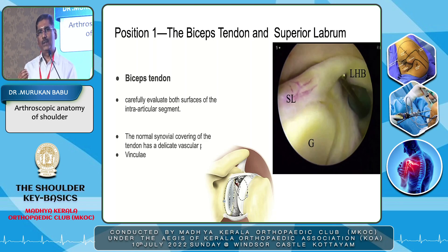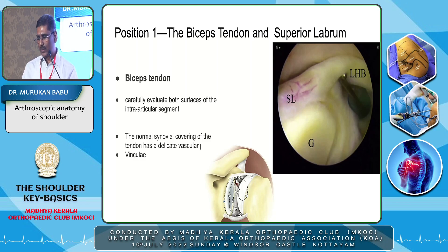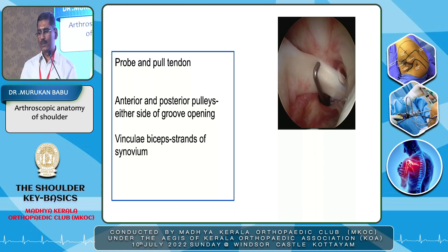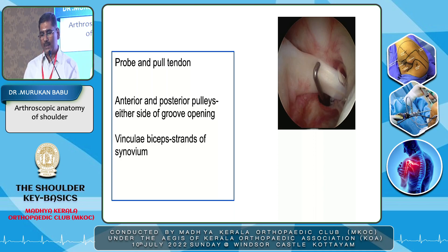From our initial days, if we were seeing the biceps tendon around, we were very happy — but this is the first landmark you need to identify. First, carefully evaluate the long head of the biceps tendon and see the anterior and posterior structures of the intra-articular segment. Sometimes you may see a synovial covering of the tendon — that is the delicate vascular structure called the vinculum. Then probe the tendon to see any fraying or detachment, and see the pulleys on the exit of the groove. You can see the anterior and posterior pulleys of the biceps tendon when you pull the tendon. The vinculum biceps are the strands of synovium.